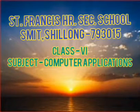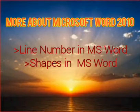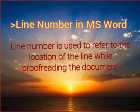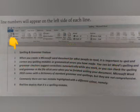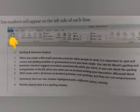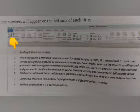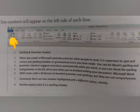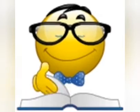Good morning students. In today's class, let us learn about line numbers in MS Word as well as shapes in MS Word. We can add line numbers to the left edge of every line in MS Word. It is used to refer to the location of the line while proofreading the document, so when we add line numbers to our document it is easy for us to read.